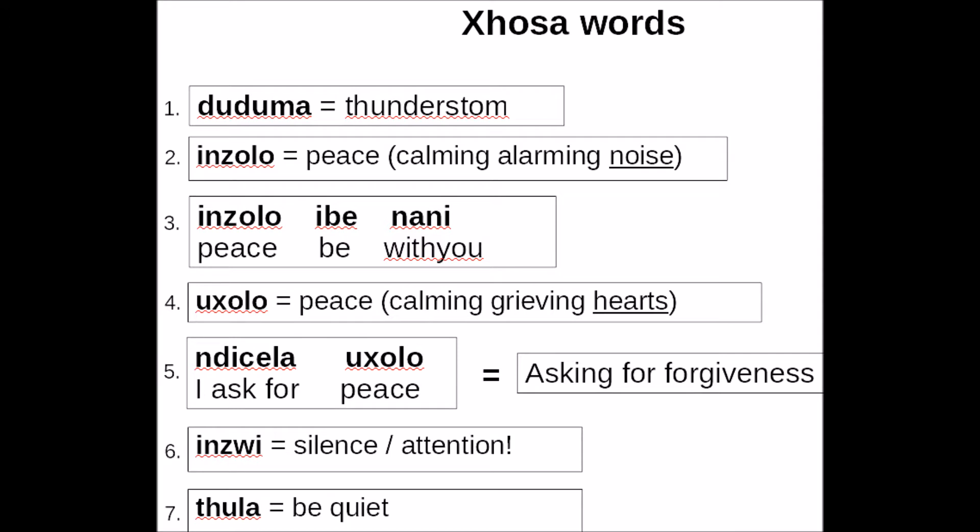These are a few very important words in this lesson. This video won't be long — I'm just zooming straight into these words one by one. Let's start with the first one: Duduma. Duduma means thunderstorm, as you can see. I'm choosing this because it's very important. Google Translate has it right this time — Duduma, thunderstorm.